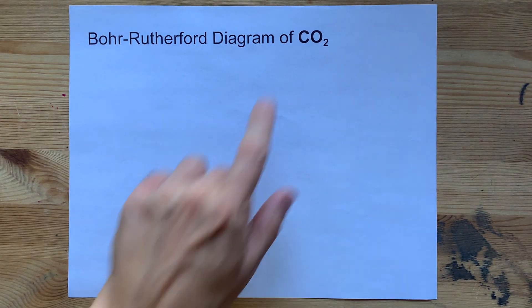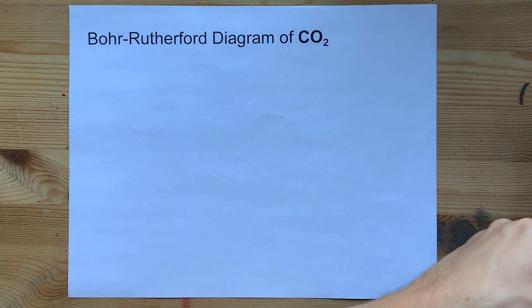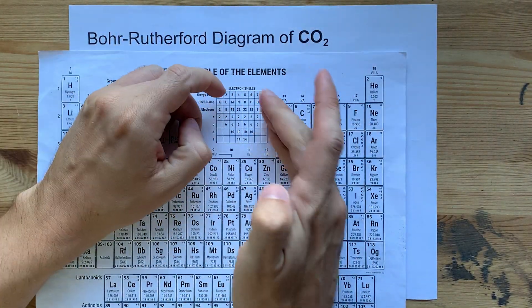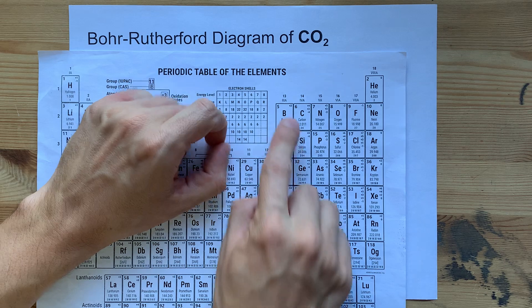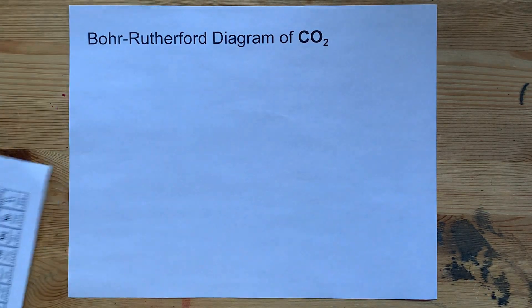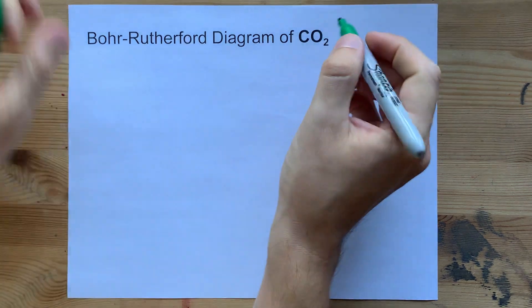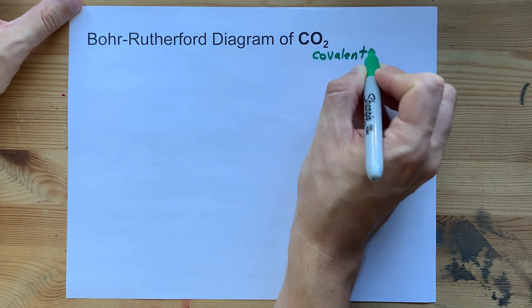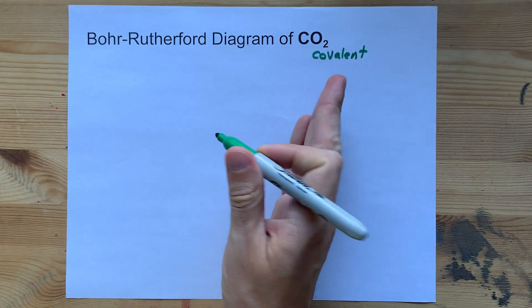Let's draw the Bohr-Rutherford diagram for carbon dioxide. Carbon is a non-metal on the right-hand side of the staircase in the periodic table. Oxygen is also a non-metal from the right-hand side of the staircase. When two non-metals combine, they make covalent compounds, which means electrons are shared.